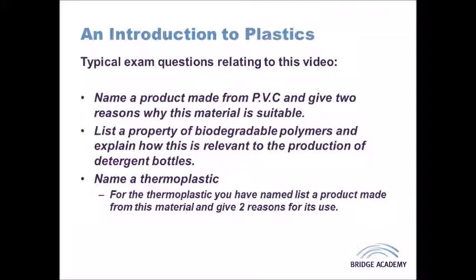The most popular type of PHA currently is PHB — poly-beta-hydroxybutyrate. Variations of PHB are used in packaging as it has similar properties to polypropylene, and it has applications in films, screws, and bone plates in a medical context. PHB is stable in certain environments but will break down when in contact with microorganisms in the soil, making it biodegradable over time.